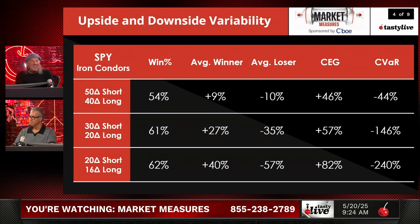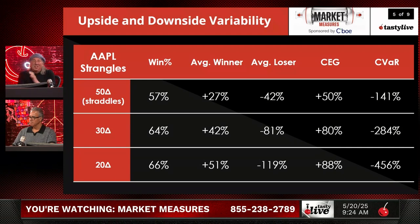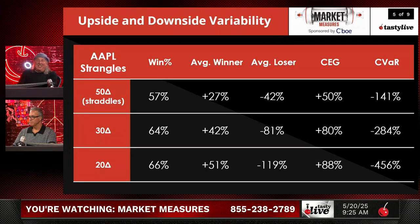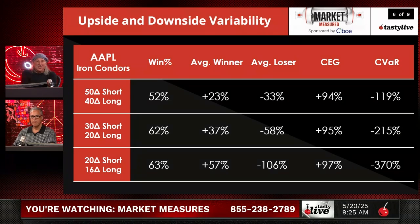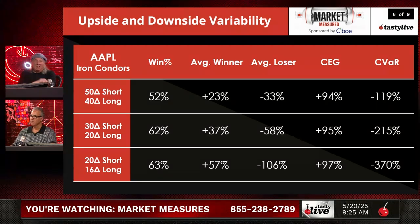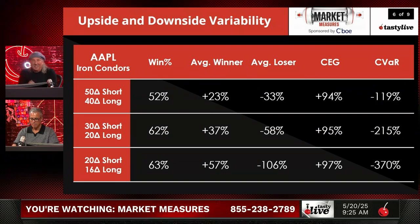Apple isn't much different. For 20 delta strangles in Apple it's a 66% win rate, 51 to 119, CEG of 88 versus CVaR of 456 — almost the same as SPY strangles. For iron condors in Apple you see virtually the same thing as SPY: 63% win rate, 57%, 106%, and then 97% and 370%. On the 50 delta iron fly, 52% chance of success, and your average winner is slightly smaller than your average loser — not quite as good as SPY.